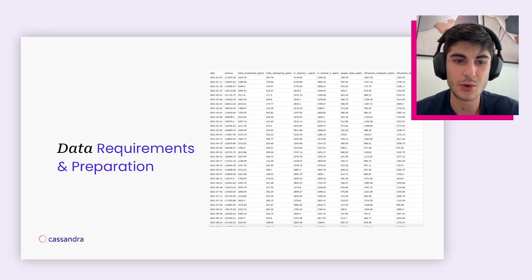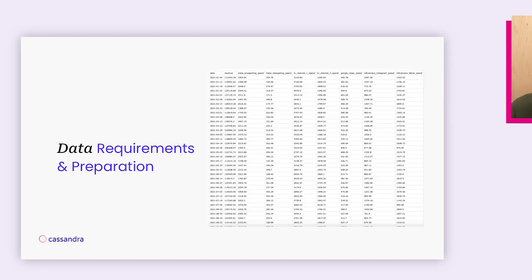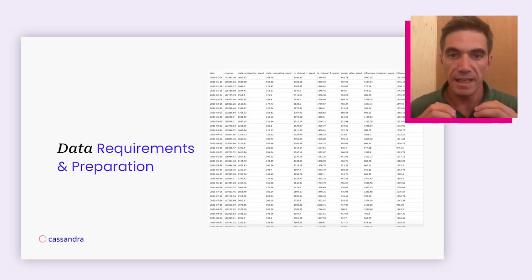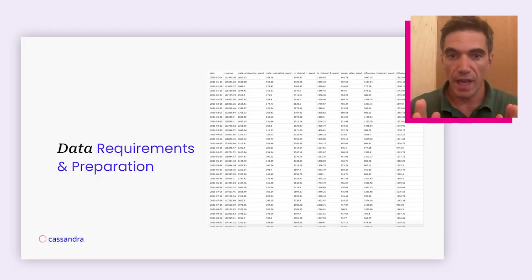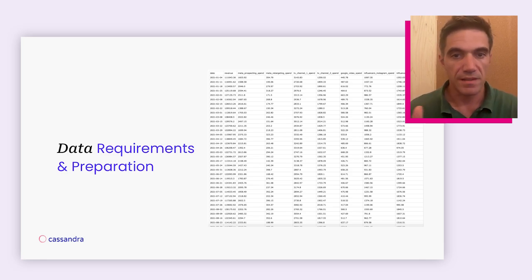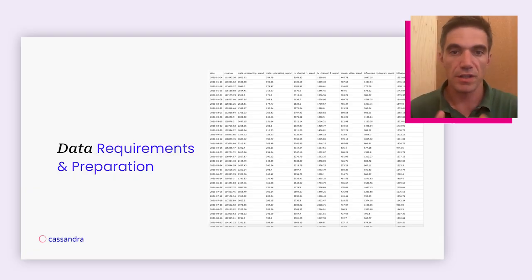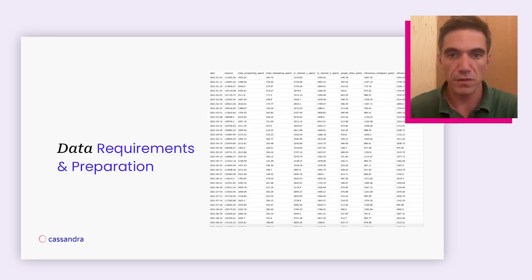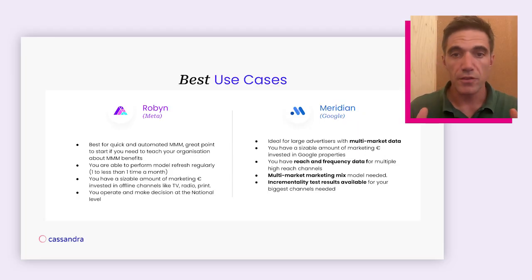Now let's talk about data requirements and preparation. To make it really concrete, here is an example of the dataset you need to get started. As Gilbert said, the dataset is the same for both Robyn and Meridian. In this example, we have a CSV file where, by day, we get the revenue of the business — which is the KPI we're trying to model — and alongside, from left to right, every day we have information on spend or impressions for each marketing channel or marketing tactic associated with that day.